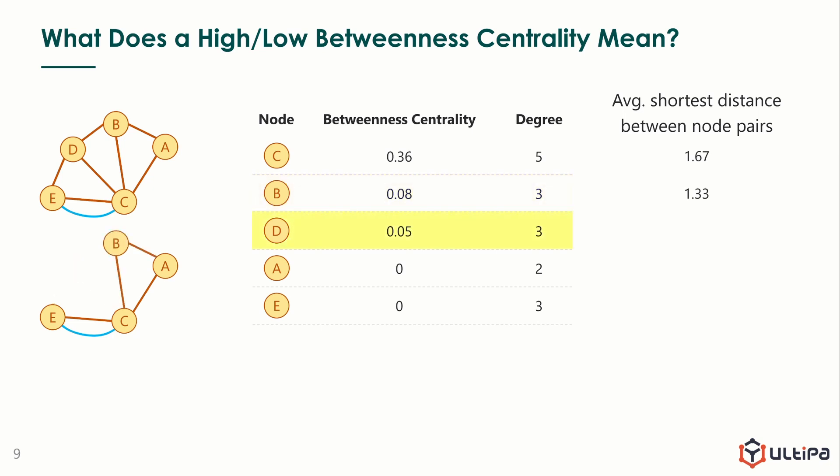Take node D out. The structure looks similar, and the distance is the same. And we continue, remove node A, the one with a score of 0. A pure loop remains, and the average shortest distance further reduces to 1.17. Lastly, get rid of node E, the distance is 1.17 too.